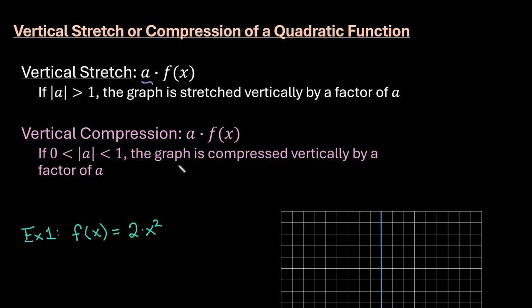A vertical compression happens if you're pushing it down. So if you're pushing down the graph, it's going to get wider. So that's essentially what is going to happen.